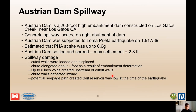Austrian Dam is a 200-foot high embankment dam constructed on Los Gatos Creek near Los Gatos, California, with the concrete spillway on the right abutment. The dam was subjected to the 1989 Loma Prieta earthquake with an estimated peak horizontal ground acceleration of about 0.6 g. The dam settled and spread with a maximum settlement of about 2.8 feet. Due to spreading and settlement, the cutoff walls were loaded and displaced, the chute elongated about a foot, up to 6-inch voids were created upstream of the cutoff walls, the chute walls deflected inward, and a potential seepage path was created behind the wall.